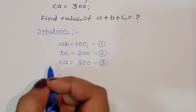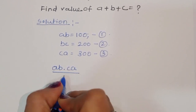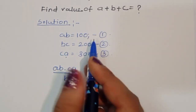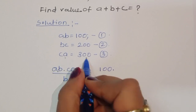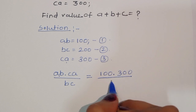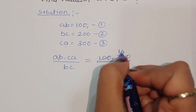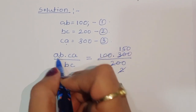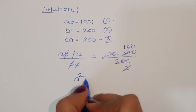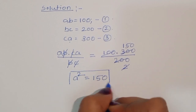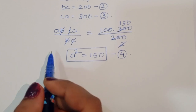Now, one thing we can do is: AB times CA divided by BC. AB times CA divided by BC is equal to — value of AB is 100, times CA which is 300, divided by BC which is 200. That gives us 100 times 300 divided by 200, which is 150. We can cancel B from B and C from C, so we get A squared is equal to 150. This is equation number 4.